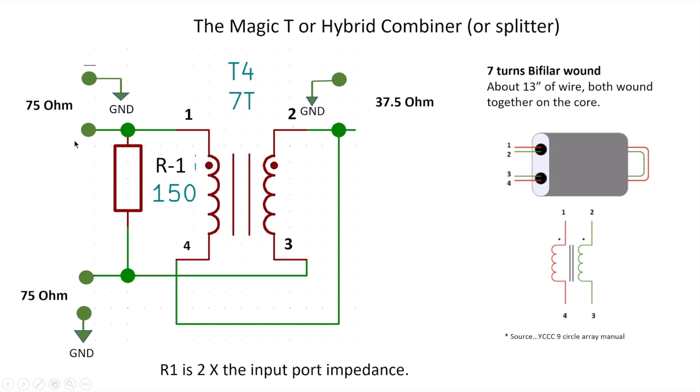We could design this as a 50 ohm system in which case the resistor would be 100 ohms. The output impedance will always be one half of the input impedance, no different than paralleling two 75 ohm pieces of coax. If we design it as a 50 ohm system, the output will be 25 ohms.